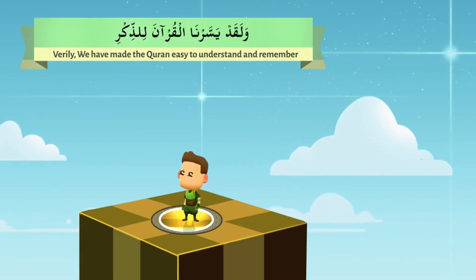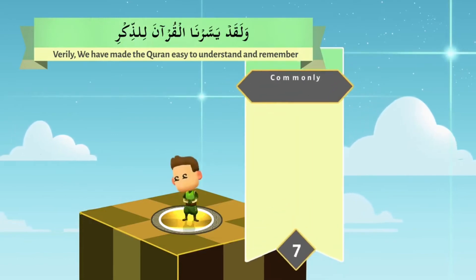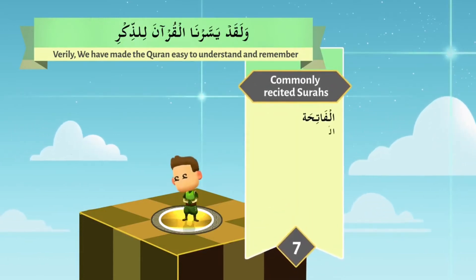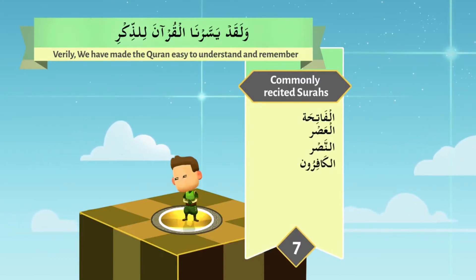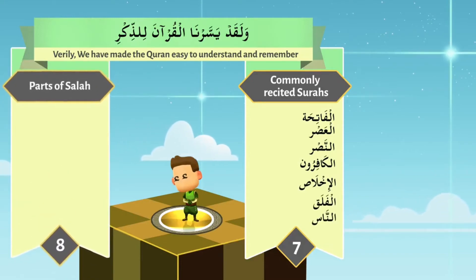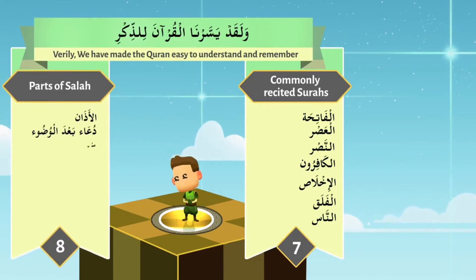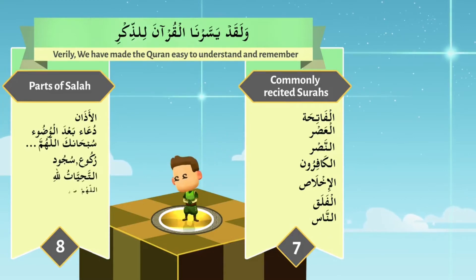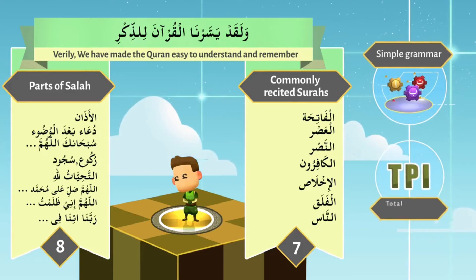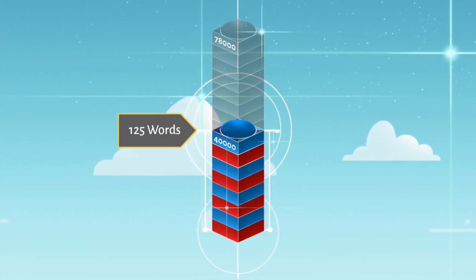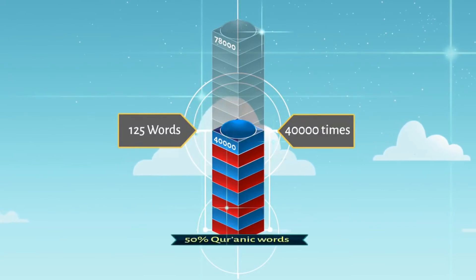If you learn the meaning of every word from a typical Salah — that is 7 commonly recited Surahs: Al-Fatiha, Wal-Asr, Iza Jaa Nasr Allah, Qul Ya Ayyuhal Kafirun, Qul Huwa Allahu Ahad, Qul A'udhu Bi Rabbil Falaq, Qul A'udhu Bi Rabbil Nas — and the parts of Salah such as Adhaan, Dua after Wudu, starting prayer, and what we say in Ruku, Sujood, At-tahiyyatulillah, Allahumma salli ala Muhammad, Allahumma inni zolamtu nafsi, and Rabbana aatina.